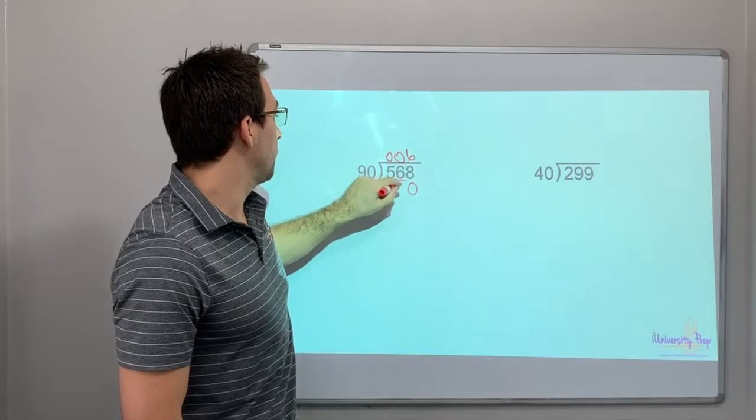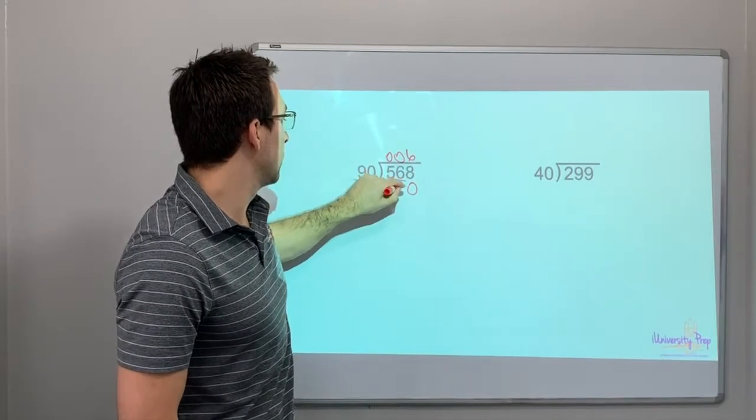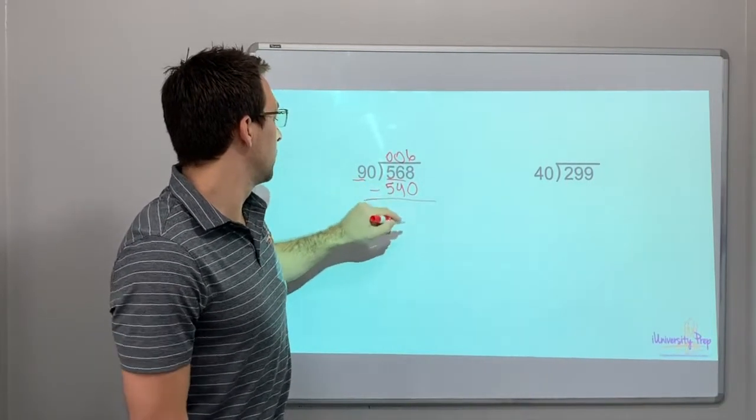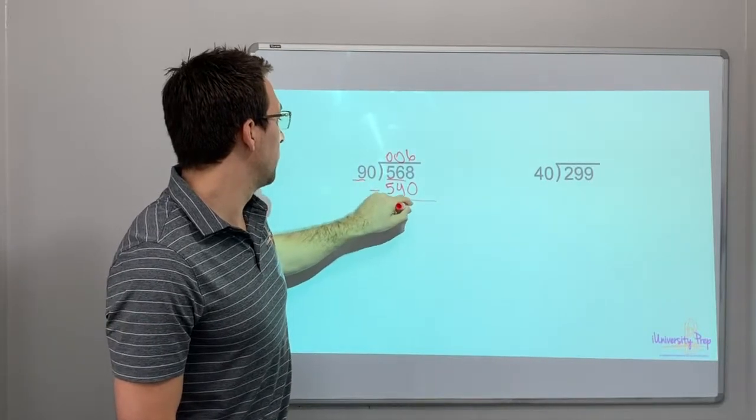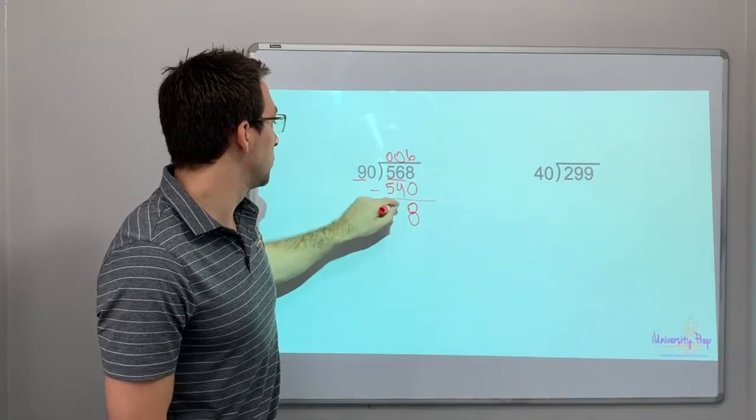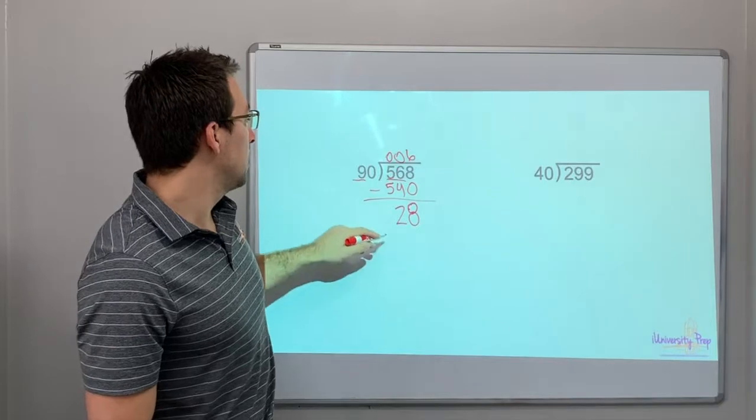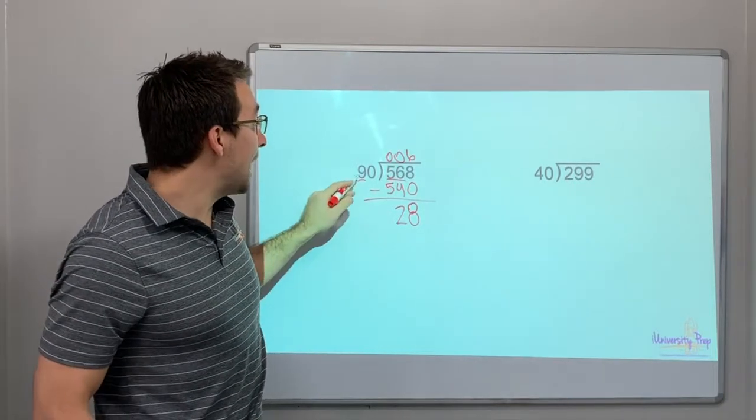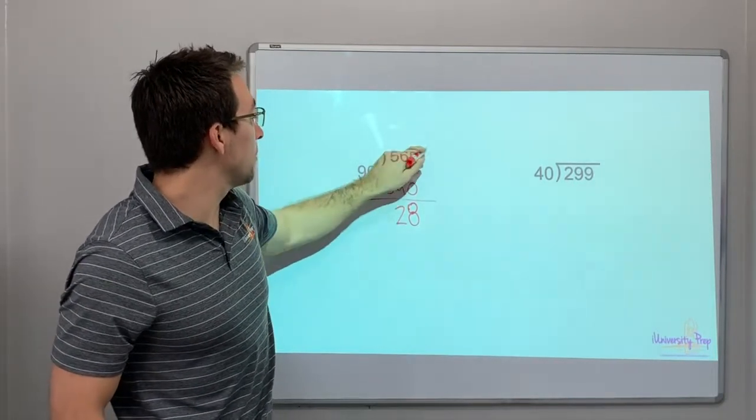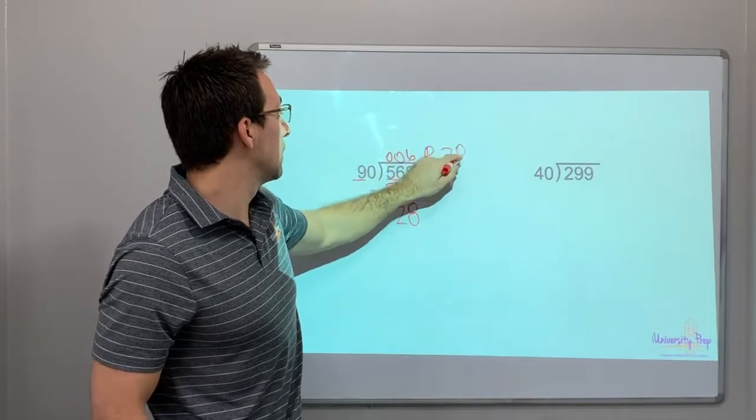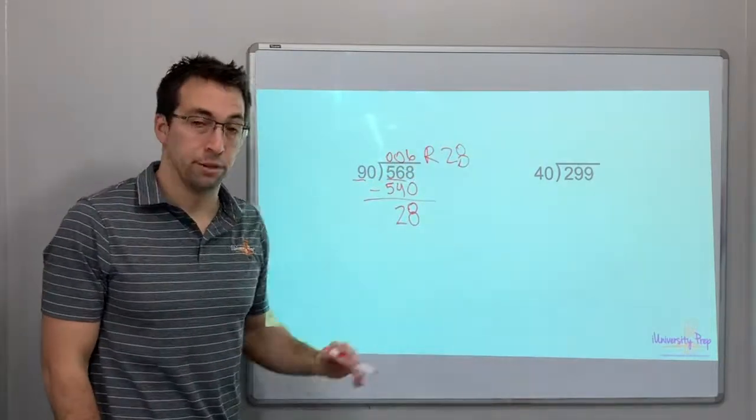0, 56, or 54, okay, would be 8. 28. Alright, so now you have a 6 remainder 28. Pretty cool.